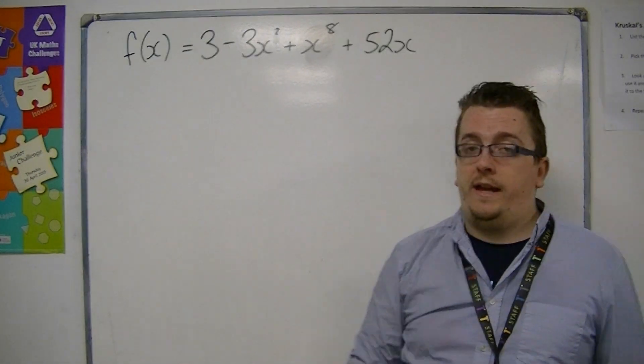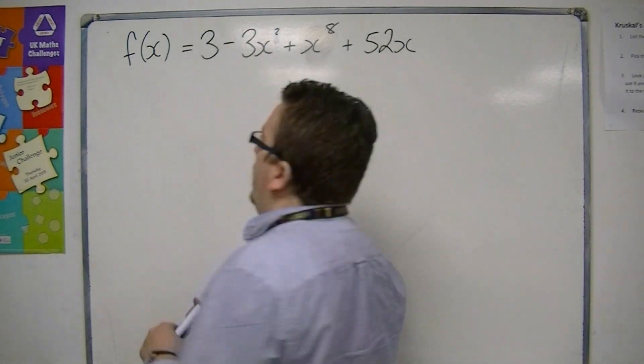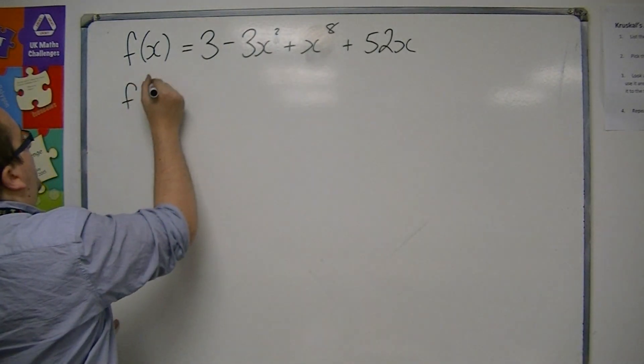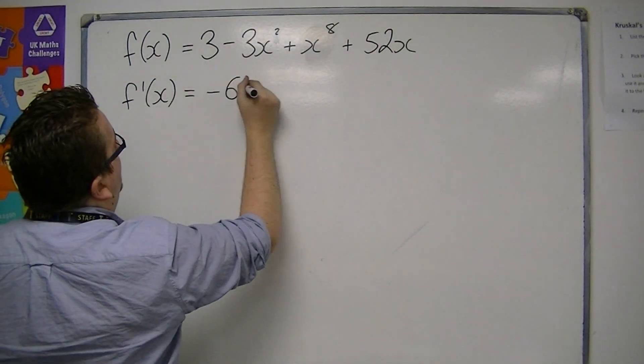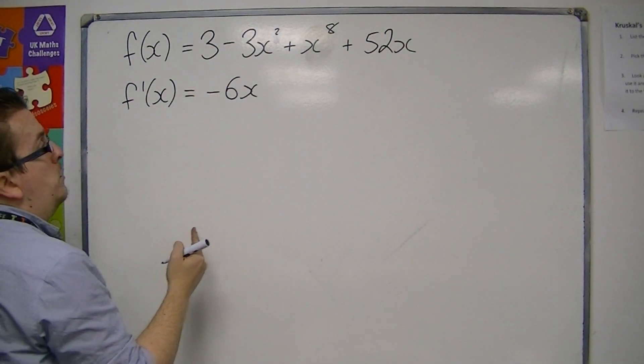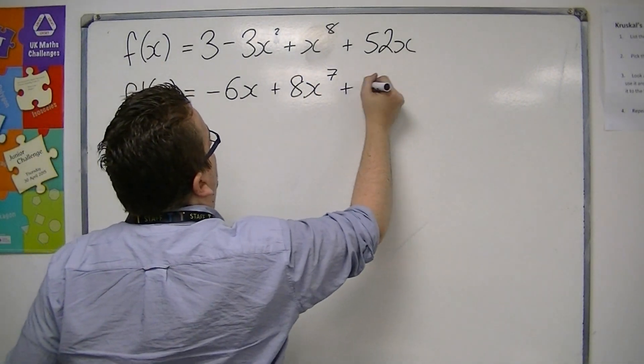Now we know that if we find the first derivative, f prime of x is used as the notation. So we would get minus 6x, the 3 differentiates to 0, plus 8x to the 7 plus 52.